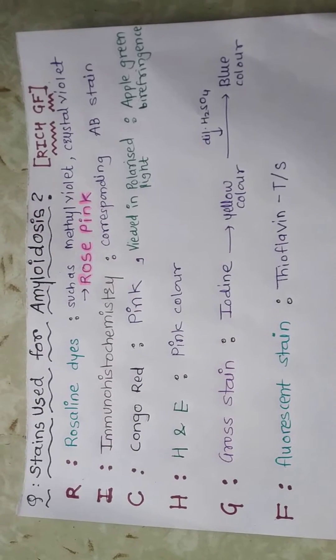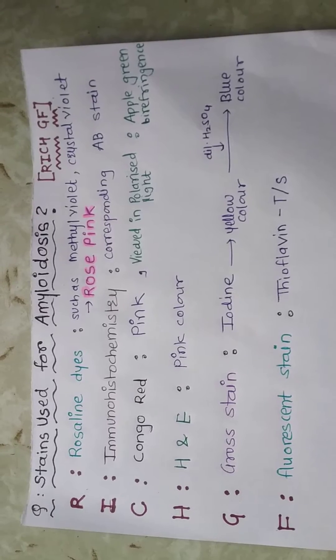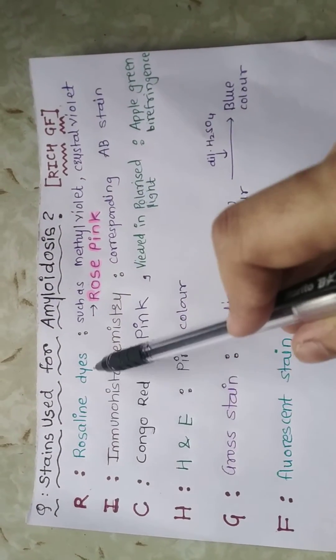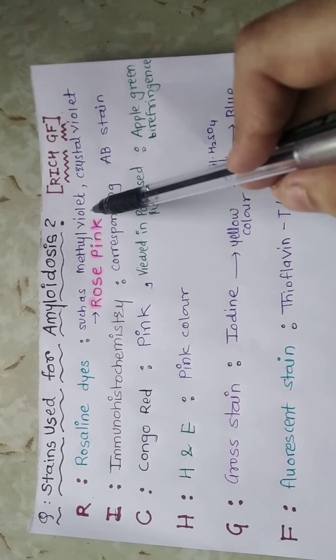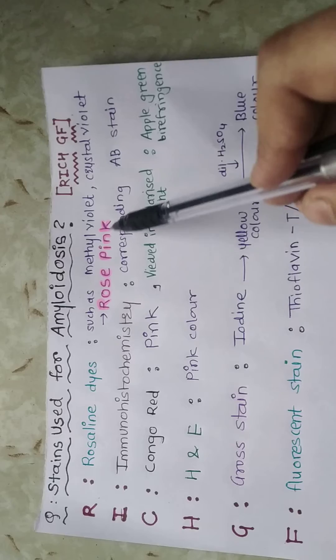Let's see what are the stains used for amyloidosis. The simple mnemonic is RICH GIRLFRIEND where R is for rosarian dyes which include methyl violet and crystal violet, which impart rose pink color.